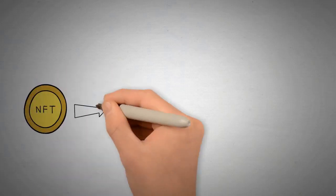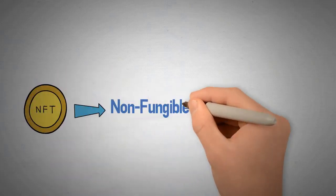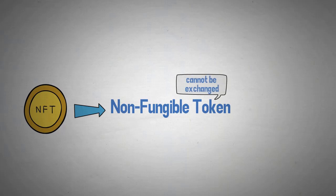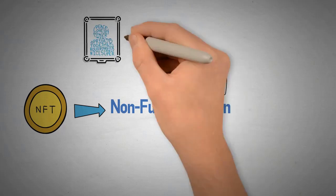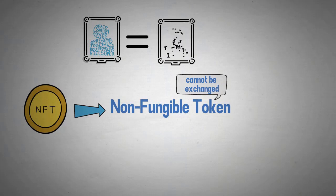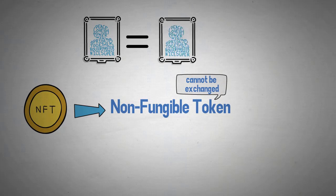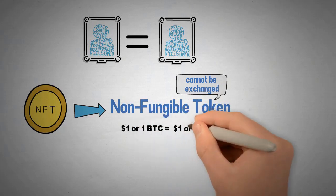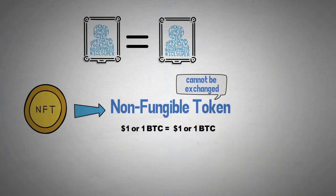NFT stands for non-fungible token. Non-fungible means that something cannot be exchanged for another item because it's unique. For instance, one piece of art is not equal to another — both have unique properties. Fungible items, on the other hand, can be exchanged for one another. For instance, one dollar or Bitcoin is always equal to another.